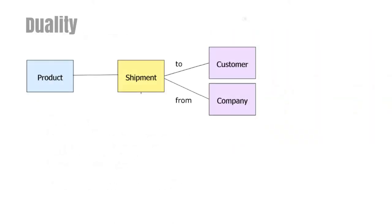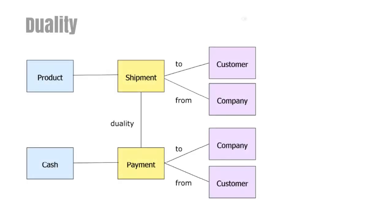Another way of illustrating dualities is shown in this figure. First, we have a shipment of some goods from a company to a customer. Note that all three basic components of REA occur here: an economic resource, an economic event, and two economic agents. And economic events should always come in pairs, so there will be a complementary payment from the customer to the company. The shipment and the payment are related to each other by a duality relationship.